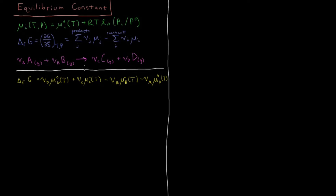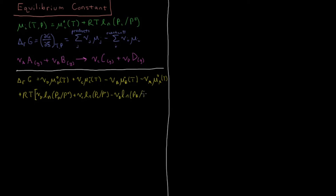Now we want to include the pressure part, so we add plus RT — factoring out RT in front — times: νD·ln(PD/P⁰) plus νC·ln(PC/P⁰) minus νB·ln(PB/P⁰) minus νA·ln(PA/P⁰). These eight terms together represent our total Gibbs energy change of reaction.